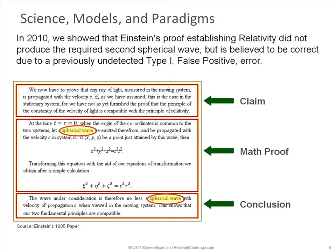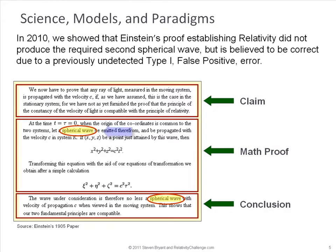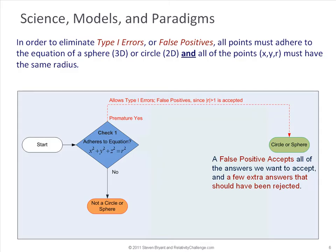How about when we look at logical arguments? Well, last year I presented a logical argument that I call the failure of Einstein's spherical wave proof. In this proof, we show that Einstein says you start with a spherical wave, you go through some mathematics to conclude that you have a spherical wave. And if you've done this step correctly, this is what establishes relativity theory. What we found is that by looking at the equations alone and not recognizing all of the requirements that are required to be a sphere or a spherical wave, you could reach a false positive conclusion.